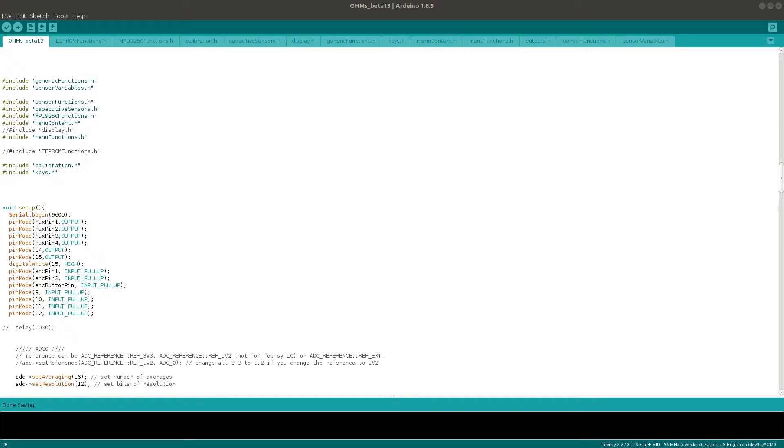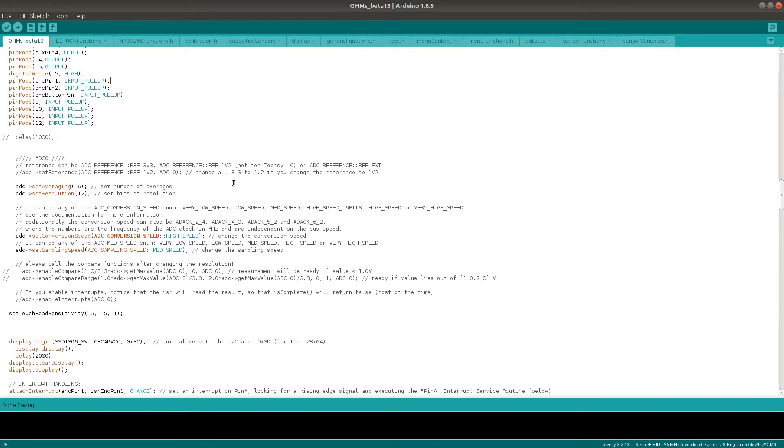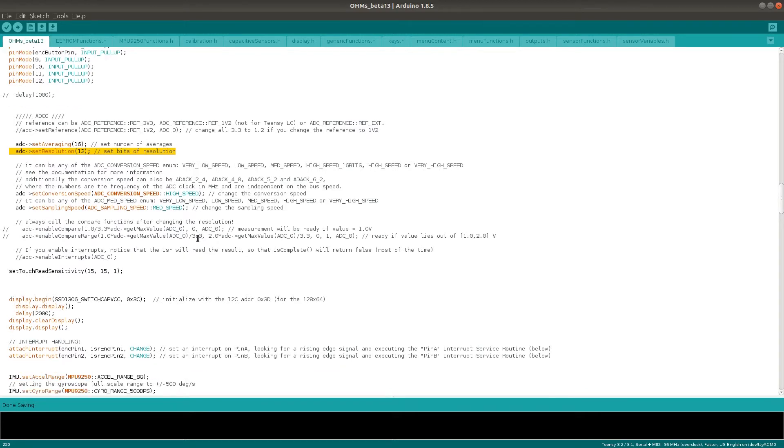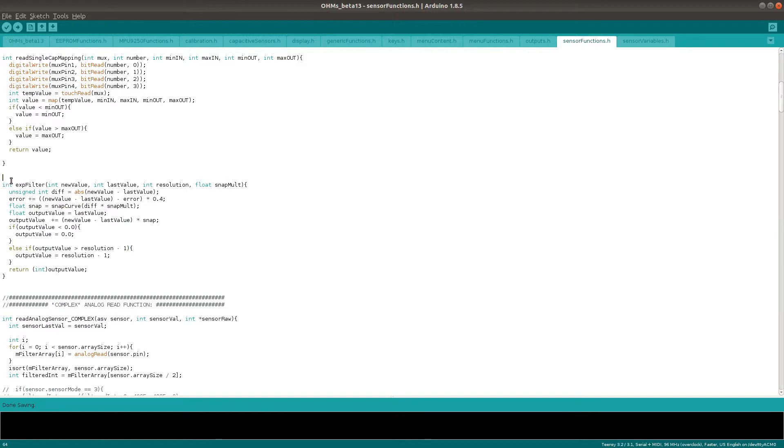Another very important thing about these analog sensors is, of course, how I read them on the microcontroller. The open horn reads all the analog sensors at 12 bits of resolution. This gives a maximum reading of 4095, which is four times more than the standard 10-bit resolution. To get a smooth reading with minimum jitter, I have adapted and simplified some of the code from the responsive analog read library and incorporated it into the open horn software. The intensity of this filter, as well as many other calibration options, can be adjusted from within the menu.